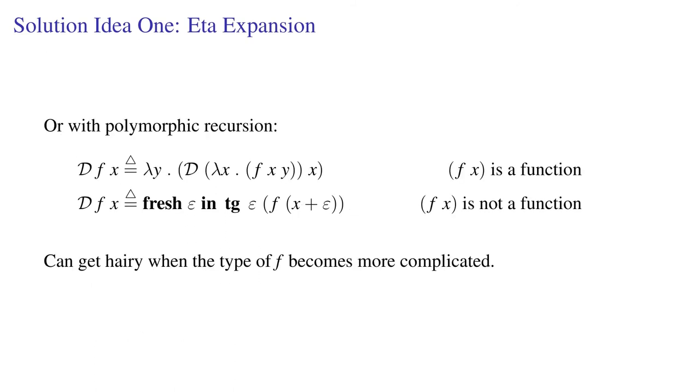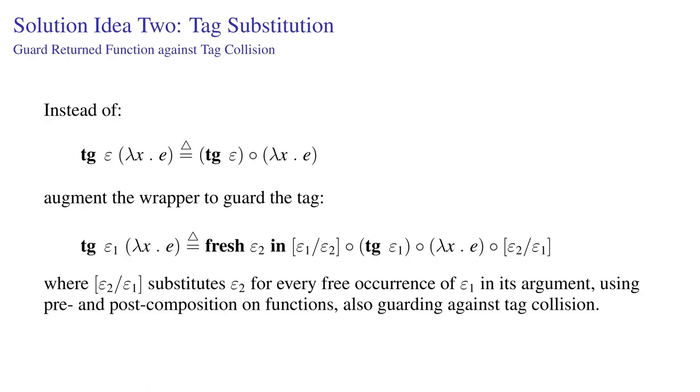This could also be accomplished using polymorphic recursion, although that gets hairy when the underlying language gets more complicated. Here's another idea. What's going wrong is that the value passed into the function whose tangent is being taken might have the same tag that's in play in that function.